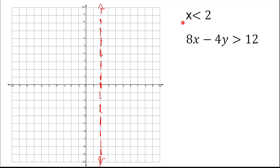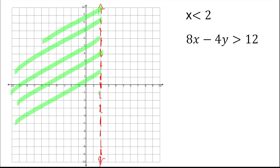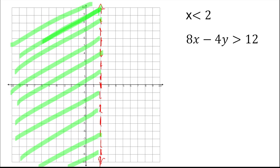I graph the dashed vertical line at x = 2. Now, which side is shaded? X is less than 2 — values like 1, 0 are all to the left and are less than 2. Therefore my shade is on the left side, from the line all the way to the left.